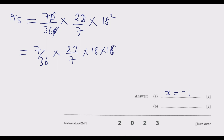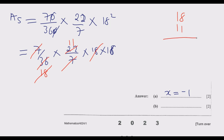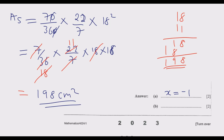So we have 11 times 18. Working that out: 1 times 8 is 8, 1 times 1 is 1, then 1 times 8 is 8, 1 times 1 is 1 — summing gives us 198. So 198 is the answer. The area is 198 cm² because the question is asking us to find the area, so it must be in square centimeters. Our final answer is 198 cm².